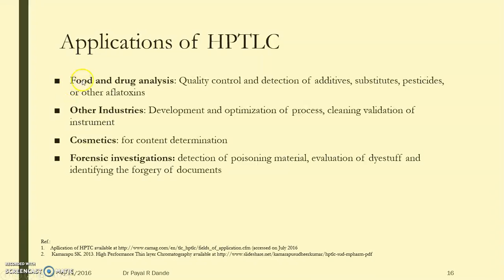There are several other industries using HPTLC. For example, food and drug analysis use it for quality control and detection of additives, substitutes, pesticides, and aflatoxins. Other industries use it for the development and optimization of different processes, as well as for cleaning validation. Some cosmetic industries use it for content determination. In forensic investigation, it is used for the detection of poisoning material, identifying dye stuffs, and detecting forgery of documents by analyzing the color and type of ink utilized.